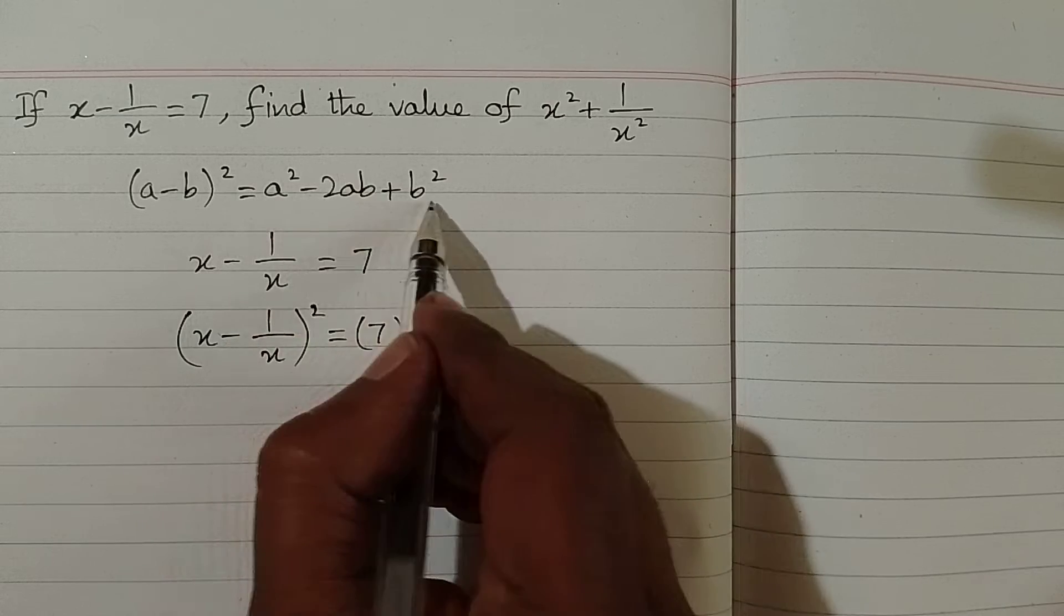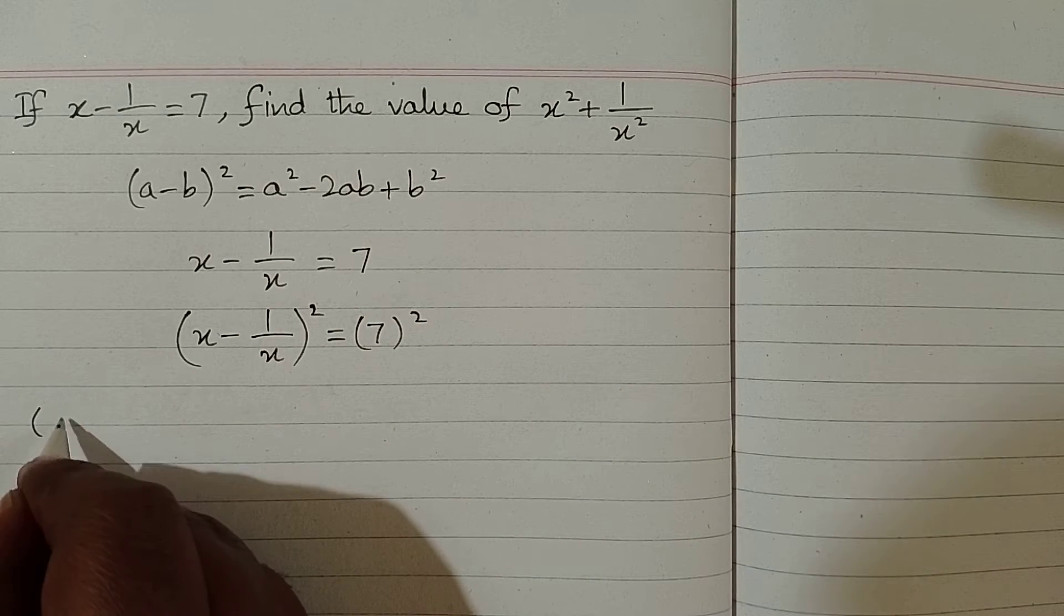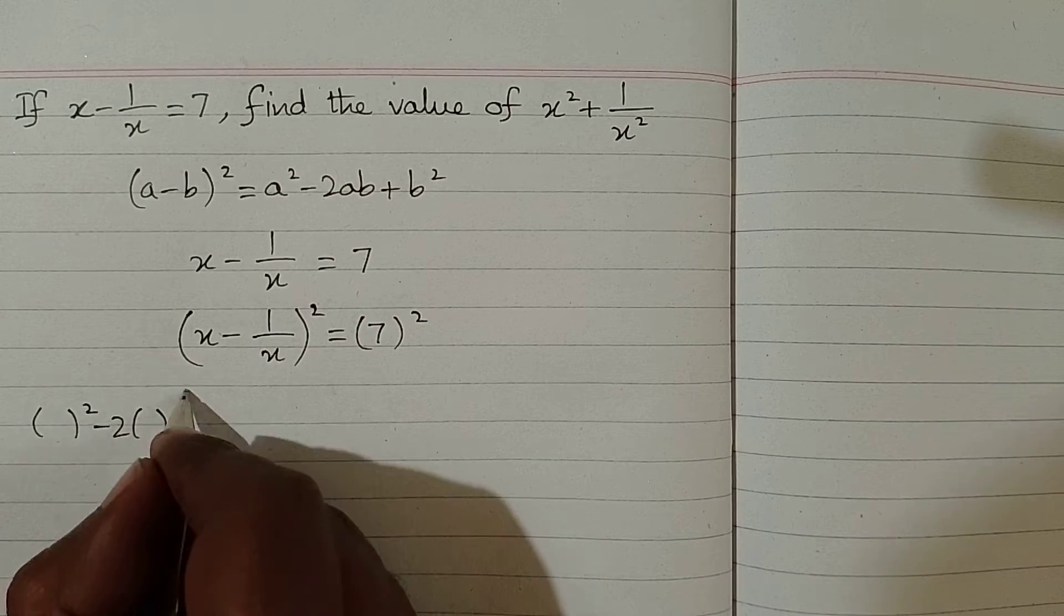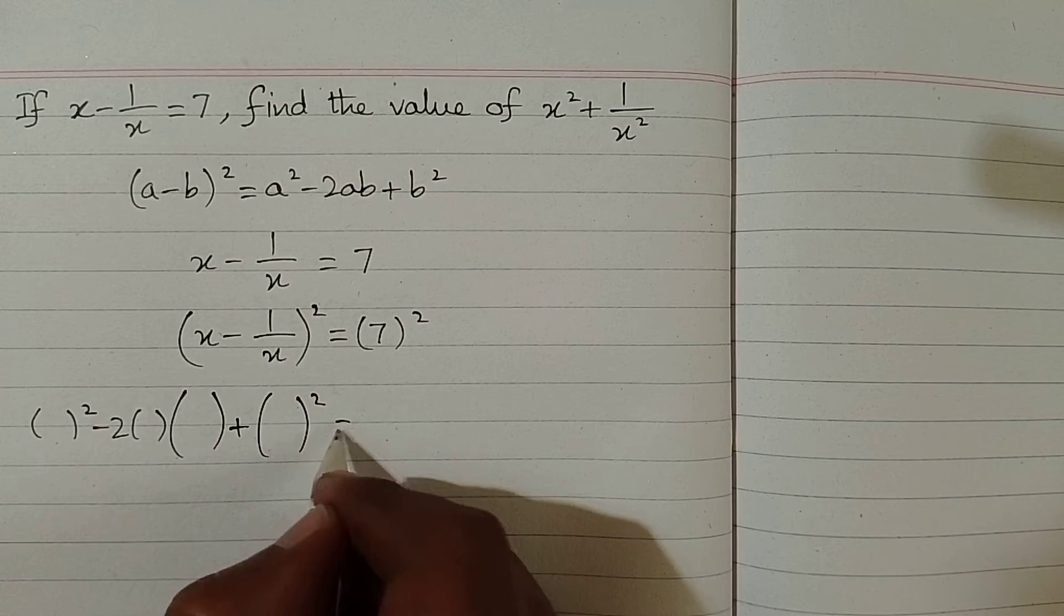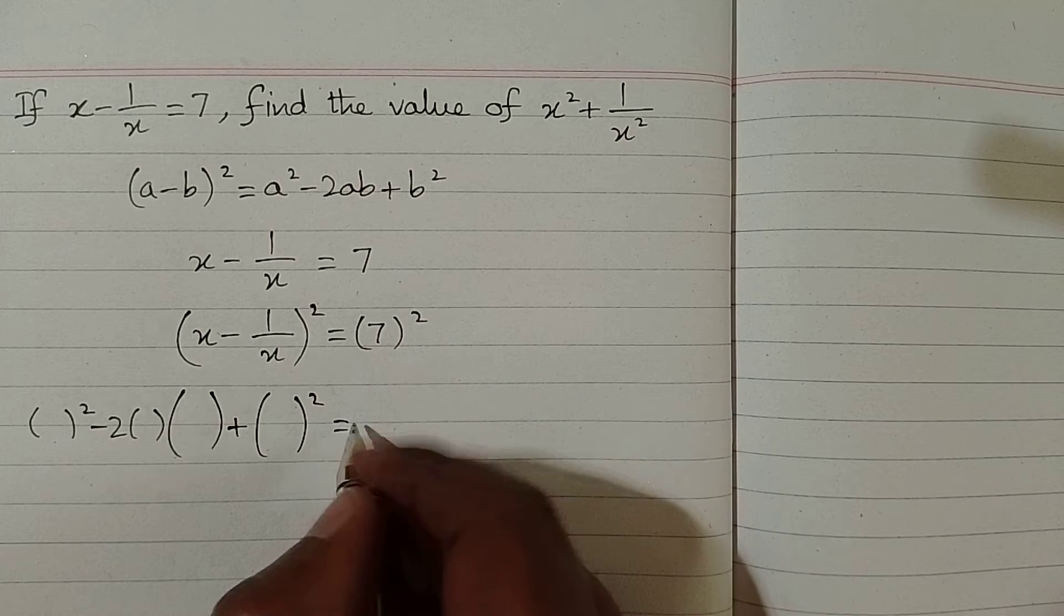So first we will write the structure of the formula which is a square minus 2ab plus b square, and the square of 7 is 49.